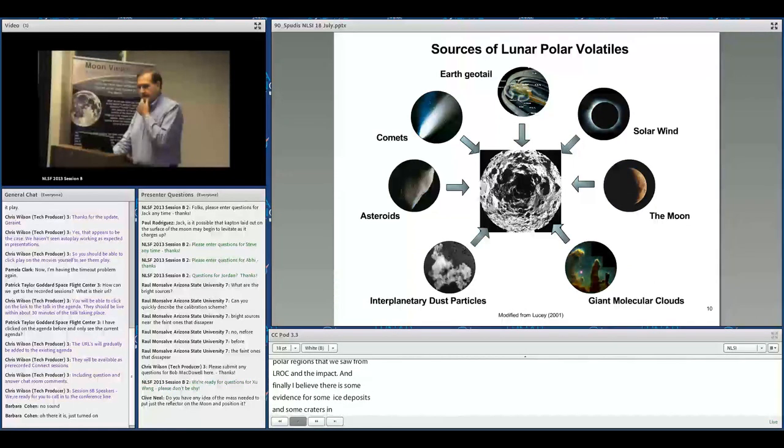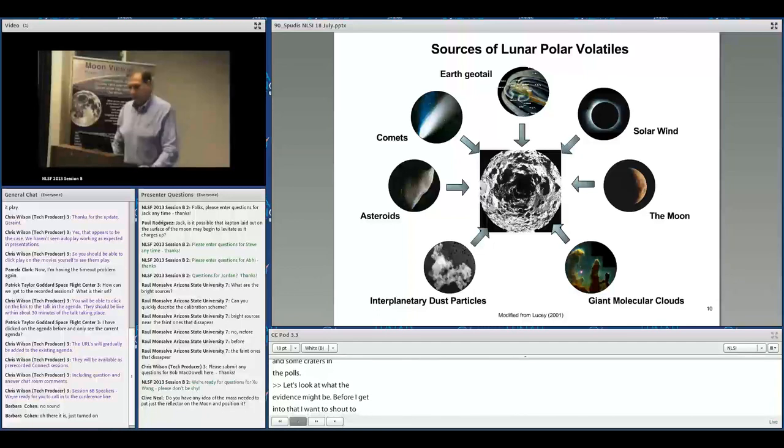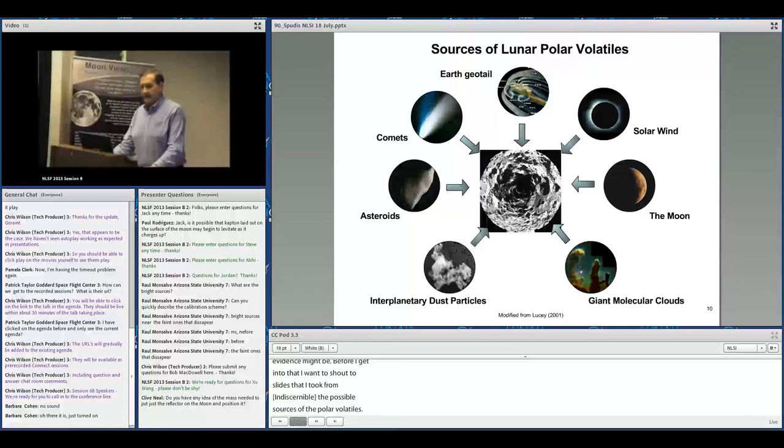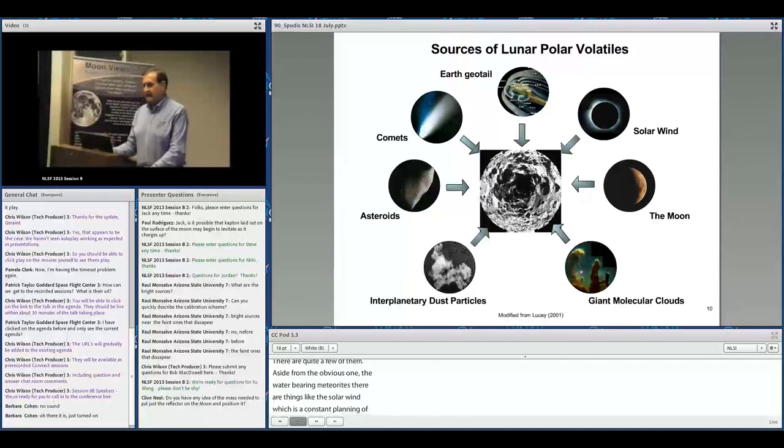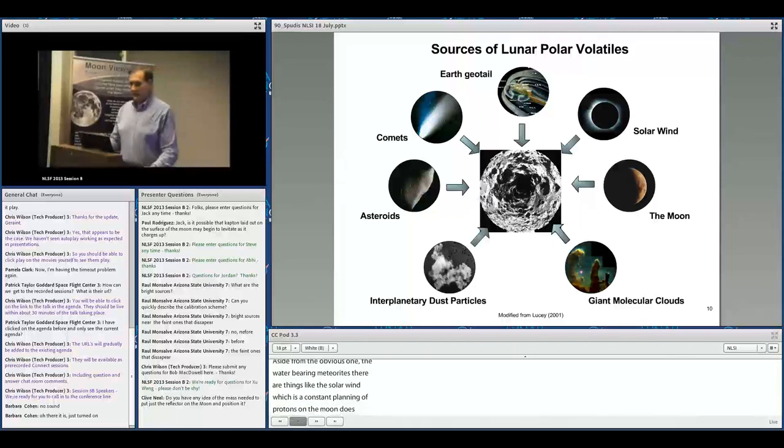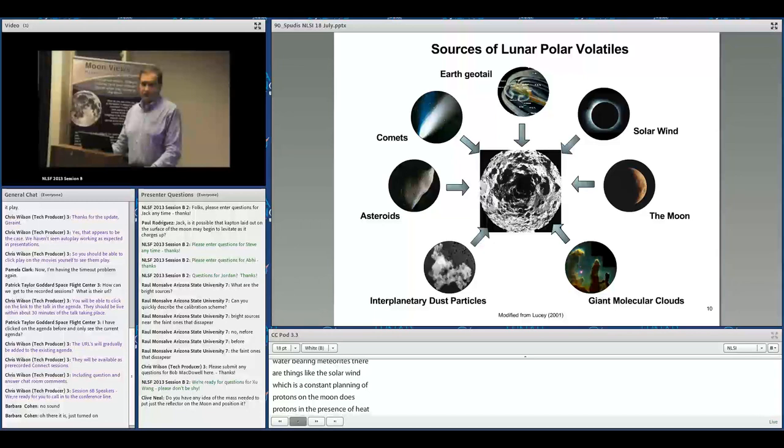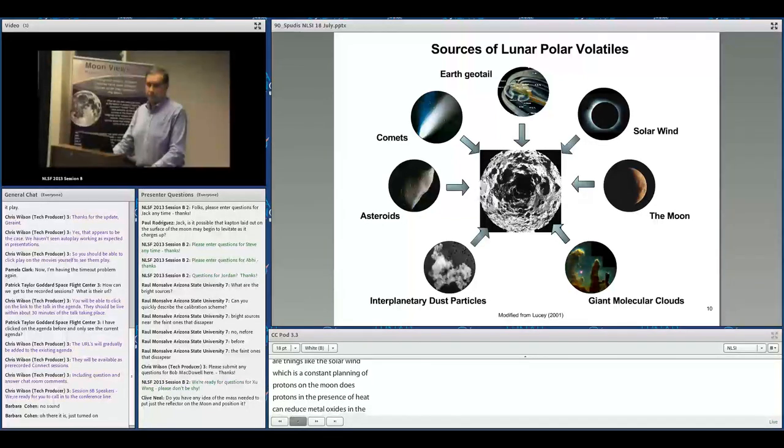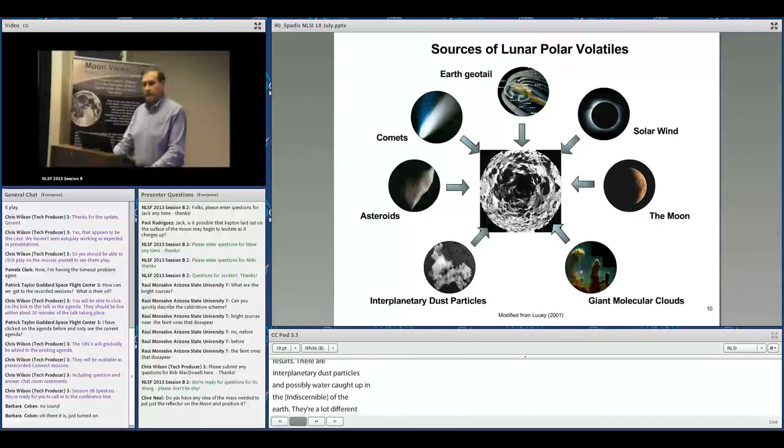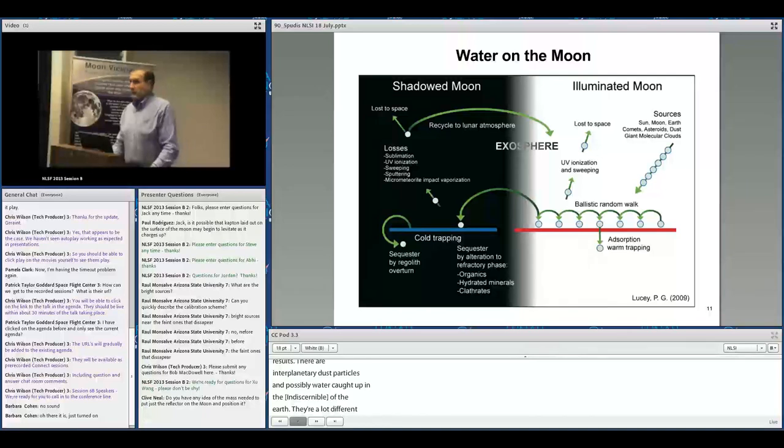These slides from Paul Lucey show possible sources for lunar volatiles. There are quite a few: comets, water-bearing meteorites, solar wind constantly implanting protons that can reduce metal oxides to produce hydroxyl, interplanetary dust particles, and possibly water from Earth's geotail. The question is how much of this water remains on the Moon versus being lost to space.